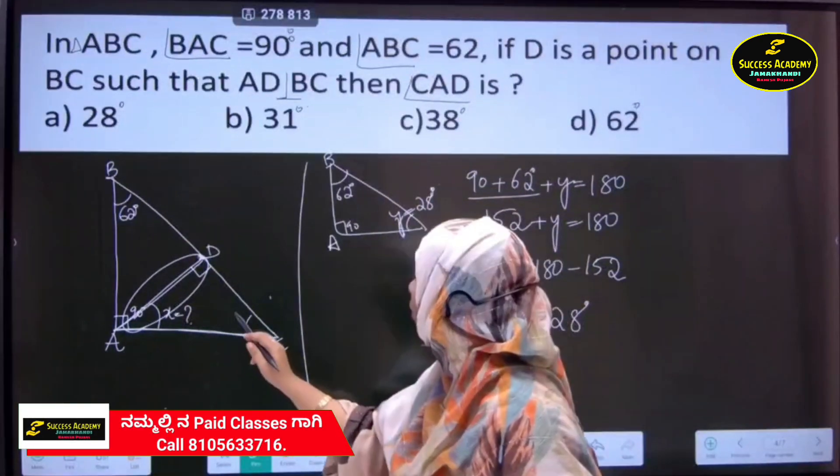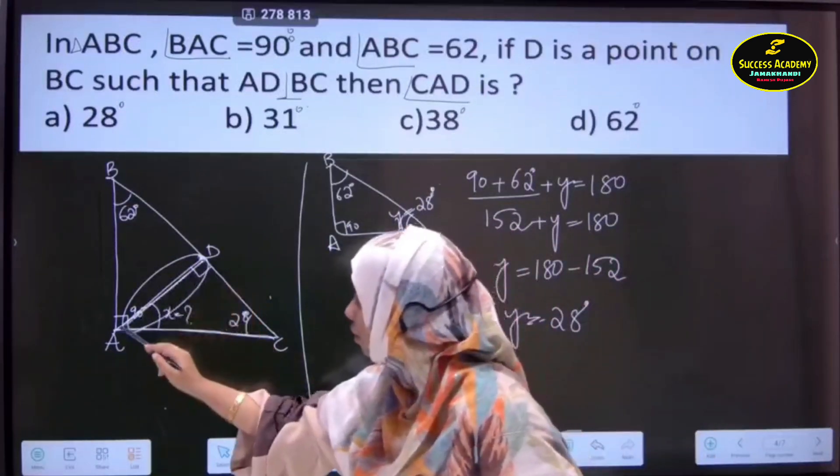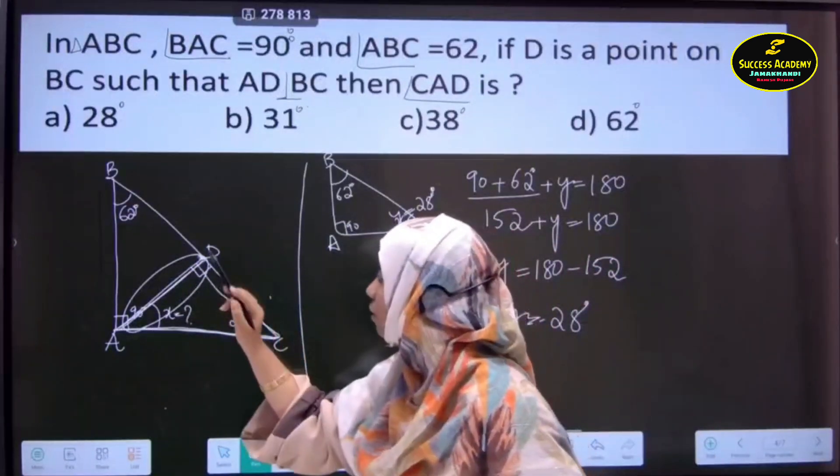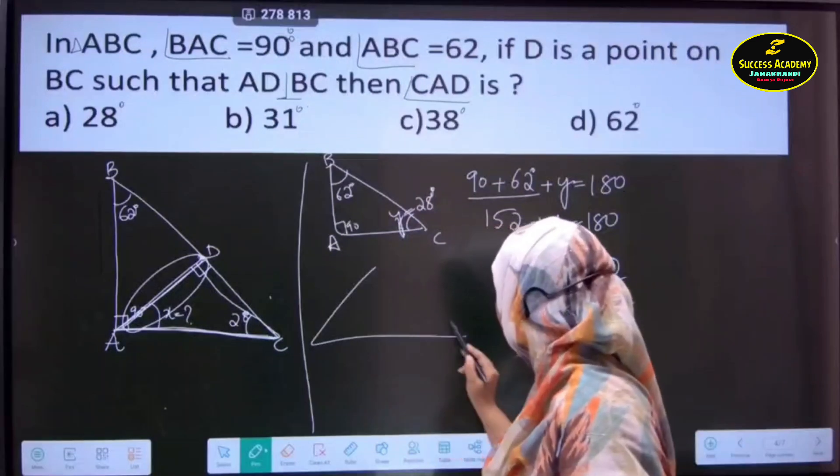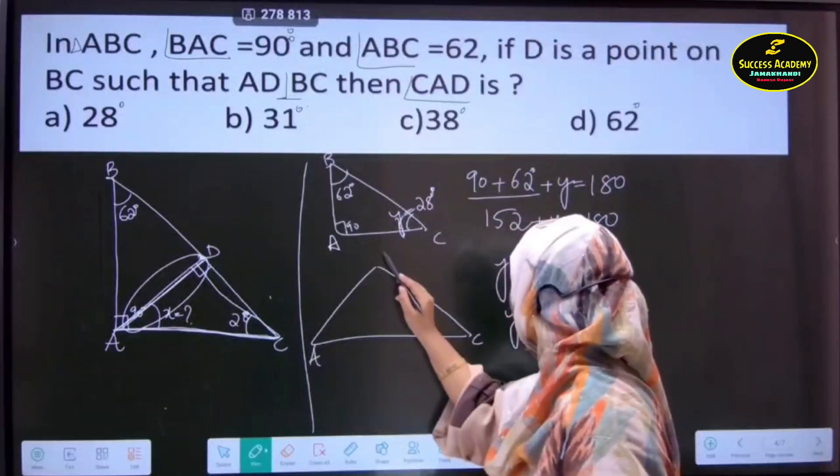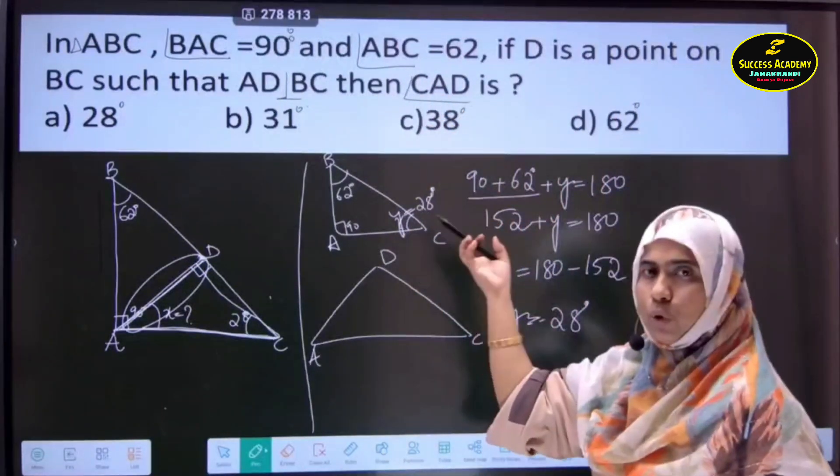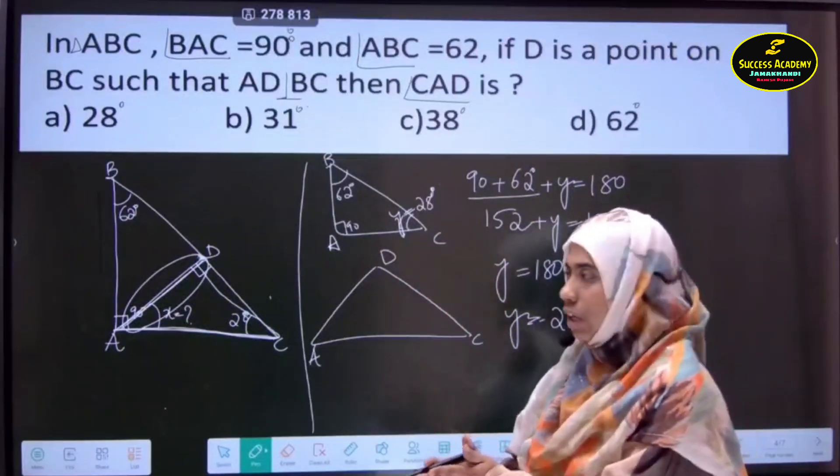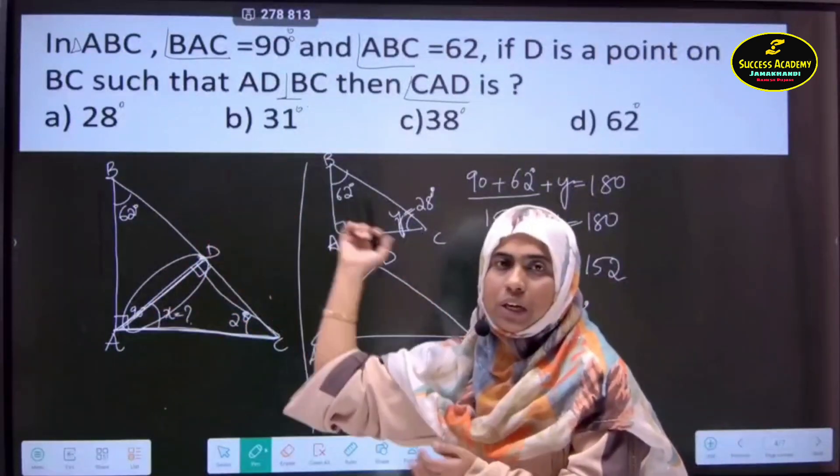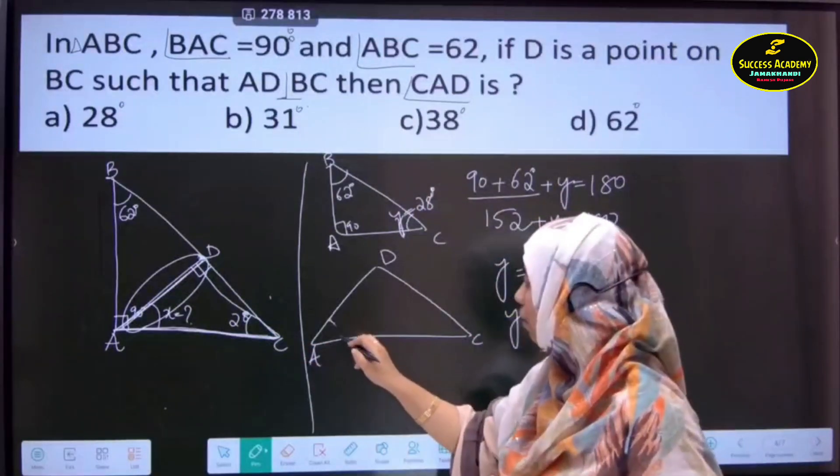Okay. Now, let us target the triangle. A, C, D. Let me draw here. This is our A, C and D because this is only related to our point. CAD is what we need here. Only we need CAD. Okay. We don't need the upper triangle. We need only the lower triangle. Because X is in this. X is here.